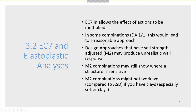When we go to design approaches using M2 factors — where we reduce the shear strength of the soil — we might get totally unrealistic wall response, with cantilever displacements in the initial stages of excavation being too large. M2 combinations might produce bending shapes of the wall that are totally unrealistic. In my experience, M2 combinations will not work well compared to allowable stress design, especially for softer clays.